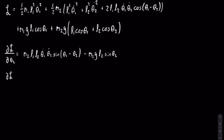Next is the partial of the Lagrangian with respect to theta2 dot. The first theta2 dot is in the second term of the Lagrangian, in the second term inside the parentheses. Using the power rule, you get m2 l2 squared theta2 dot. The next occurrence is in the second term, third term inside the parentheses — theta2 dot times constants — giving m2 l1 l2 theta1 dot cosine of theta1 minus theta2.